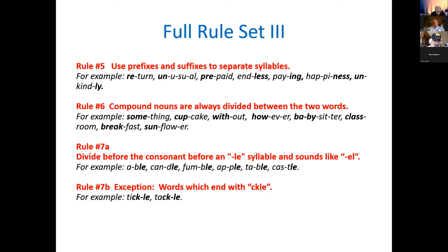Rule seven has two situations, both done strictly by parsing. You examine whether a word ends in '-le' with a consonant before it — like '-ple' — and divide just before the 'le.' Examples include 'able' and 'candle.' The exception is words ending in '-ckle': you always divide before the 'le' so that the 'ck' stays with the prior syllable. I took rule seven to explore.